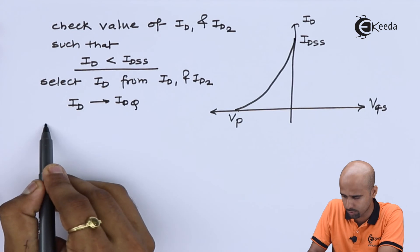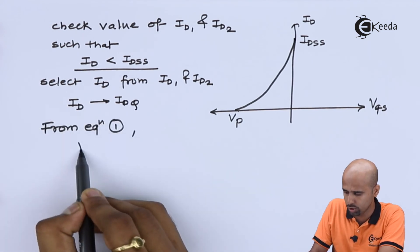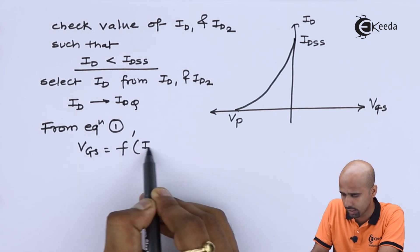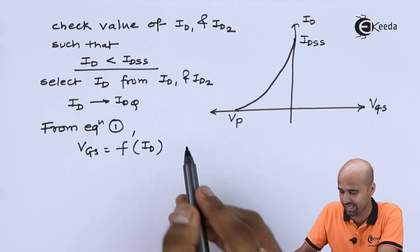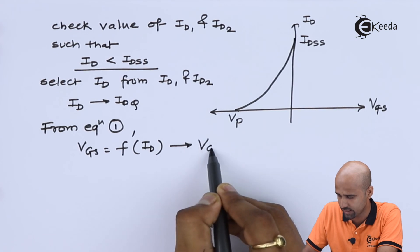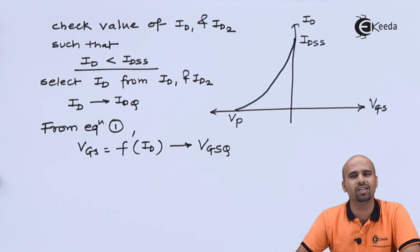Then I know that from equation number one, we know that VGSQ. So that we can easily get the value of VGSQ. Now for VDSQ, whatever we have done in VCEQ, that is the next step.